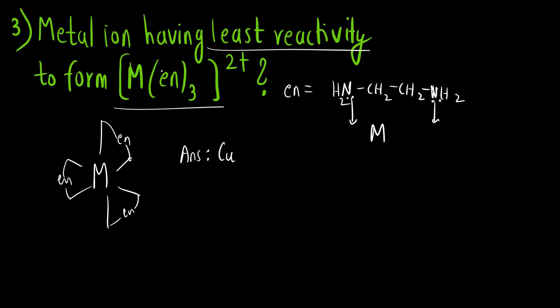If you see EN is a neutral ligand. So if I want to find out the oxidation state of metal it will be M(en)₃²⁺, let's say this is x plus 3 into EN is a neutral ligand. So 0 is equal to +2. So x plus 0 is equal to +2. So oxidation state is +2.